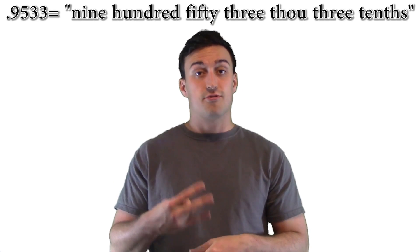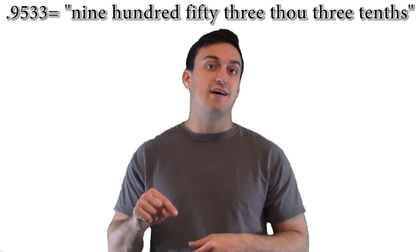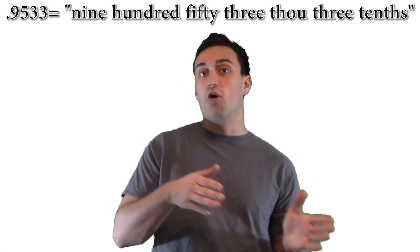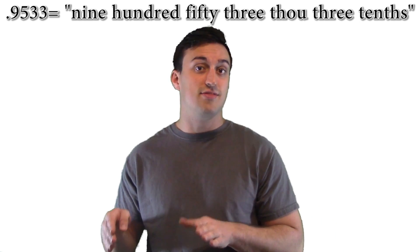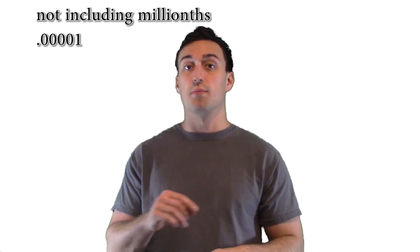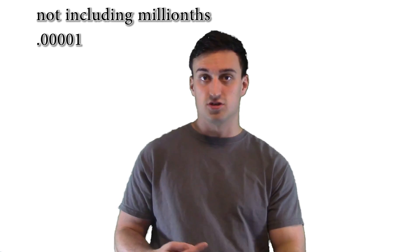Another example: 953 thou, three tenths is .9533. You can go all the way up to 999 thou and nine tenths before it becomes one inch, and then the process just repeats. You can have one inch three thou, six inches five hundred and thirty-three thou three tenths.